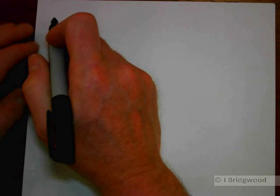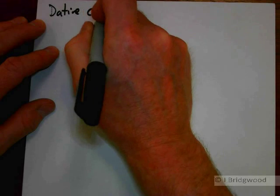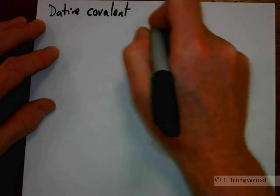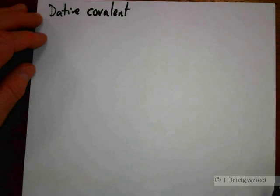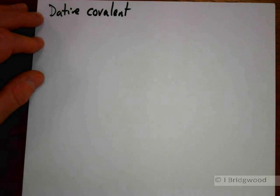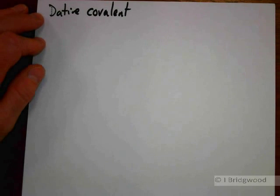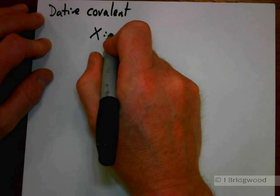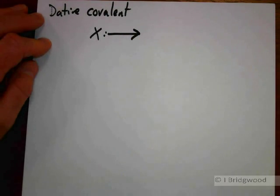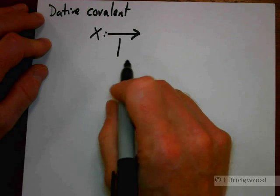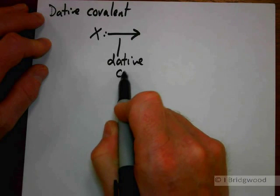A dative or coordinate bond, sometimes called a dative covalent bond, involves the sharing of a pair of electrons, but both electrons come from the same atom. A pair of electrons on X can donate that pair of electrons, and we can show that pair of electrons by an arrow. That is our dative covalent bond.